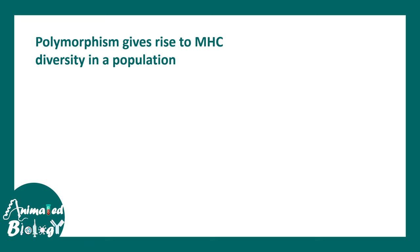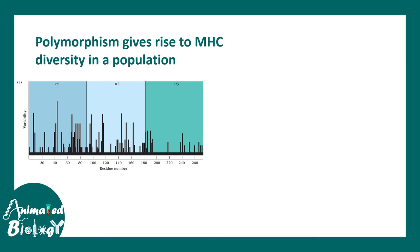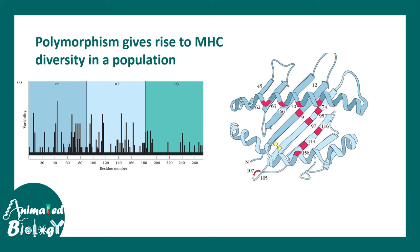In the alpha 1, alpha 2, and alpha 3 domains there are specific locations that are hotspots for polymorphism. Crystallographic data has shown that these highly polymorphic regions fall in the peptide binding groove of MHC molecules. This means these changes determine how MHC would interact with the antigen, which is critically important in the context of the immune system.